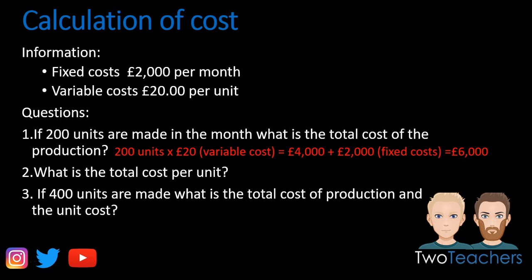For question 1, we had 200 units with a variable cost of £20 per unit, so 200 × £20 gives a total variable cost of £4,000. Adding the fixed cost of £2,000 gives a total of £6,000. For question 2, to find the cost per unit you divide the £6,000 total cost by the 200 units, giving an answer of £30 per unit.